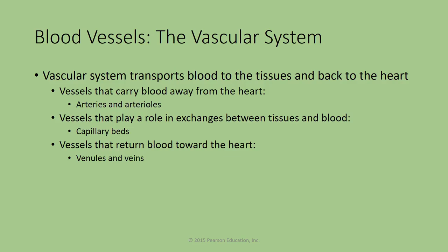The blood vessels that are carrying blood away from the heart are your arteries and your arterioles. The difference between them has to do with the diameter. The larger diameter, immediately right near the heart, will be the arteries. As it moves away from the heart, the diameter of the blood vessel gets smaller and smaller. Ultimately, there's going to be a certain point where we're changing it from artery to arterioles.